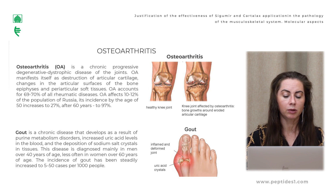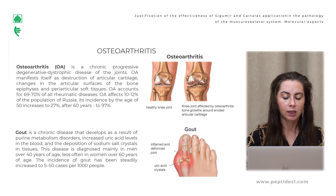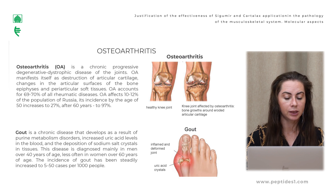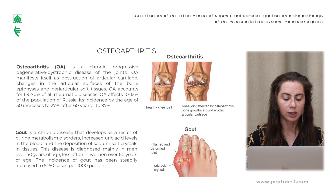Gout is a chronic disease that develops as a result of uric acid metabolism disorders, with increased uric acid levels in the blood and the deposition of sodium urate crystals in tissues. This disease is diagnosed mainly in men over 40 years of age, and less often in women over 60 years of age.